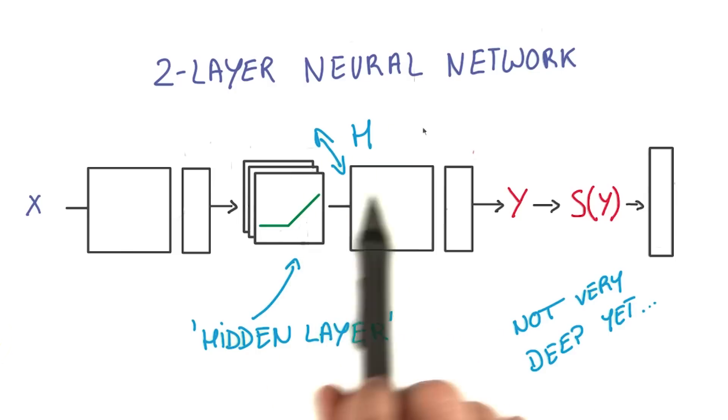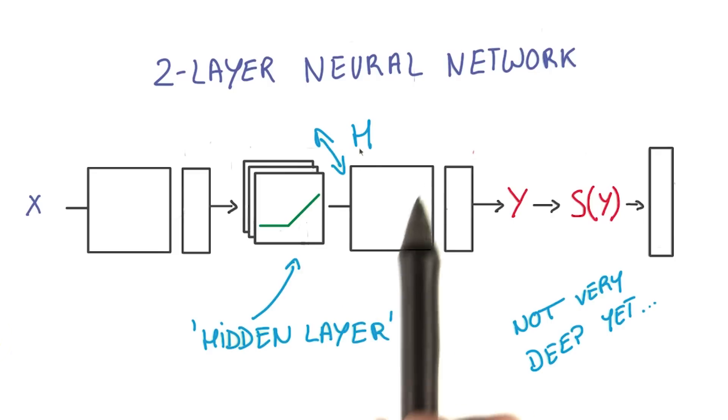You can make it bigger, more complex by increasing the size of that hidden layer in the middle. But it turns out that increasing this H is not particularly efficient in general. You need to make it very, very big, and then it gets really hard to train.